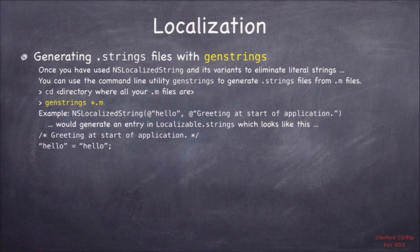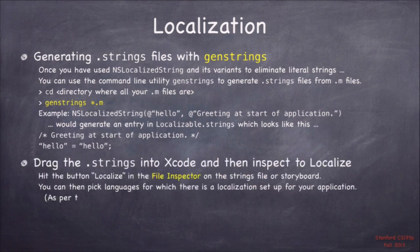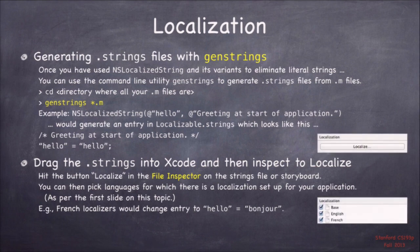The reason all arguments must be literals is because of a command-line utility called GenStrings — short for 'generate strings' — which looks through a .m file for all those NSLocalizedString macros and extracts them all out into a strings file for you. That's how you get the base strings file that you then localize to other languages. For example, NSLocalizedString(@"hello", @"greeting at start of application") gets turned into: a comment 'greeting at start of application', and then 'hello = hello;' in the strings file. The French localizer would come along and change 'hello = bonjour'.